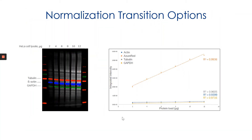For researchers interested in reevaluating their normalization practices, there are a few options. As discussed, chemiluminescence is not necessarily linear, especially at higher protein concentrations, due to enzyme activity. One way researchers can update their normalization step is to transition from chemiluminescence to fluorescence. Fluorescence does not rely on enzymes to generate signal; instead, it relies on excitation light sources and emission filters to detect signal. This generates a more linear signal response over a greater range of protein concentrations.